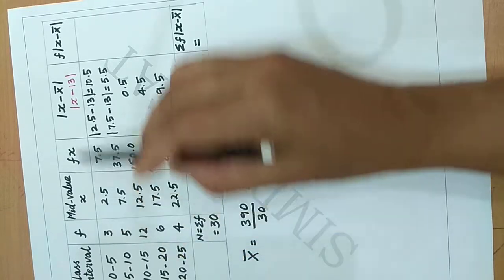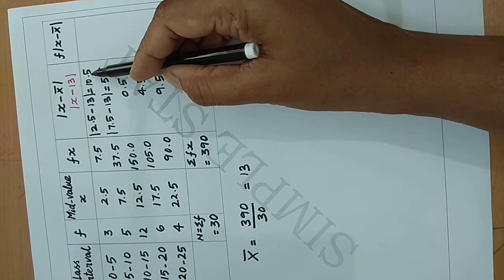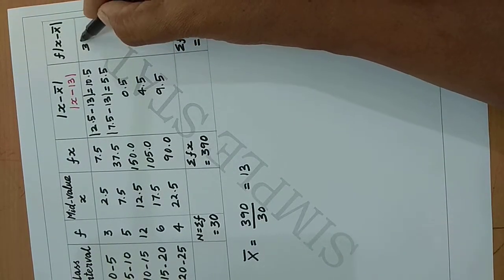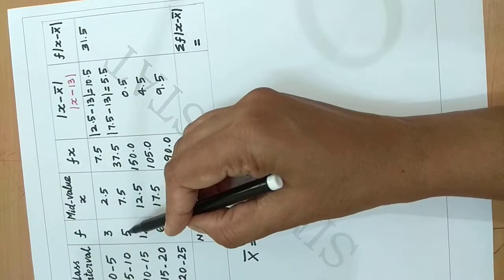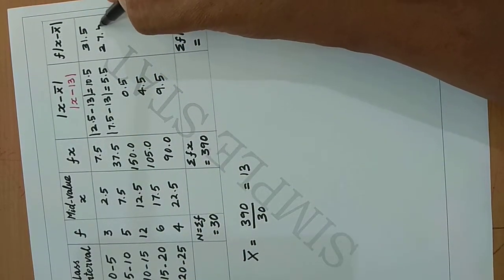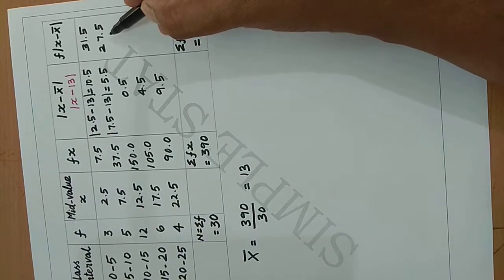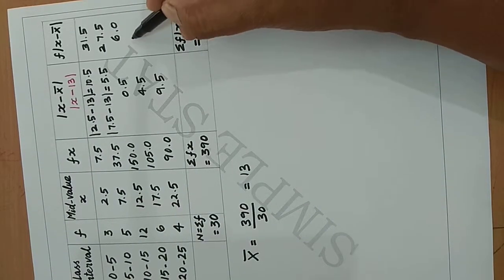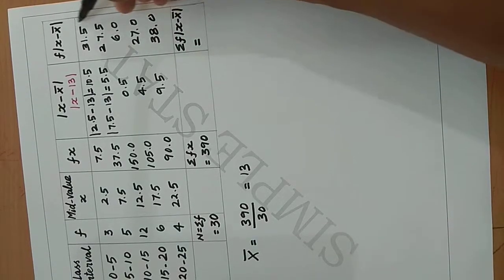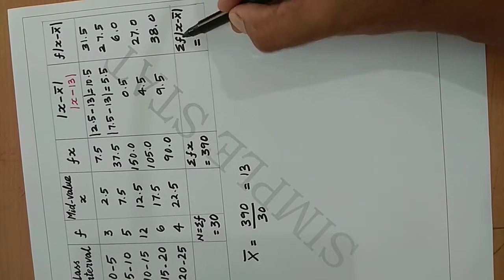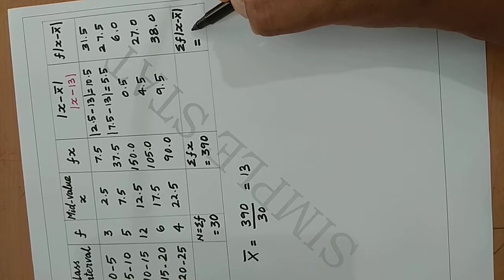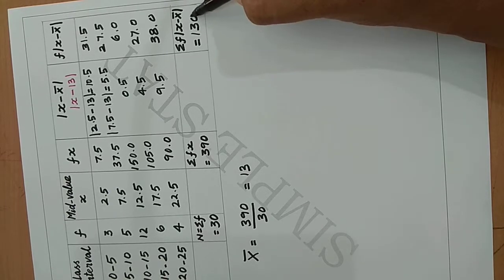f × |x - x̄|: for f = 3 and |x - x̄| = 10.5, we get 3 × 10.5 = 31.5. Similarly, 5 × 5.5 = 27.5. Proceeding this way to complete all calculations, the total Σf|x - x̄| = 130.